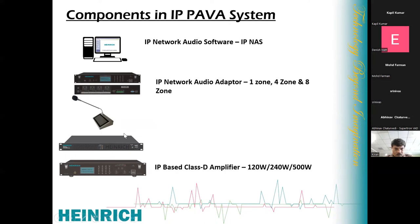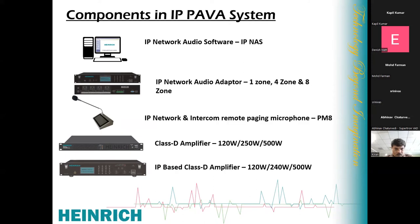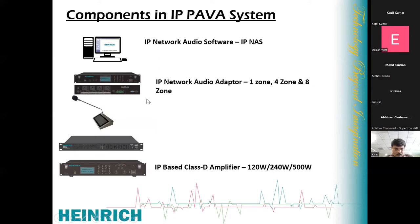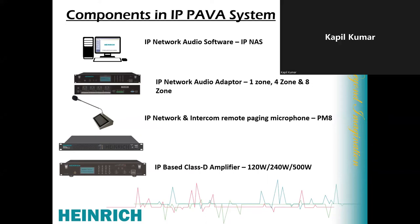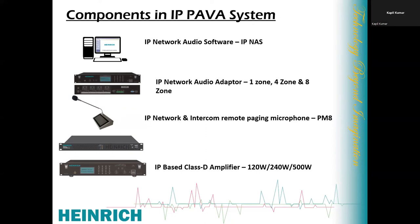There are three types of system architectures in IP PA: first, IP controller-based; second, IP amplifier-based; and third, IP speaker-based. All three systems can also be combined to create a single integrated system. I will explain where to use each type — IP controllers, IP amplifiers, and IP speakers.